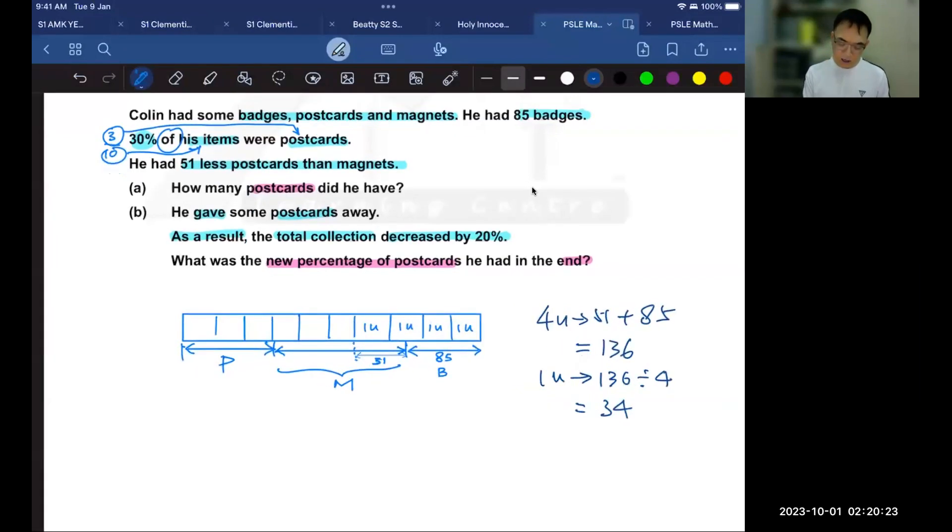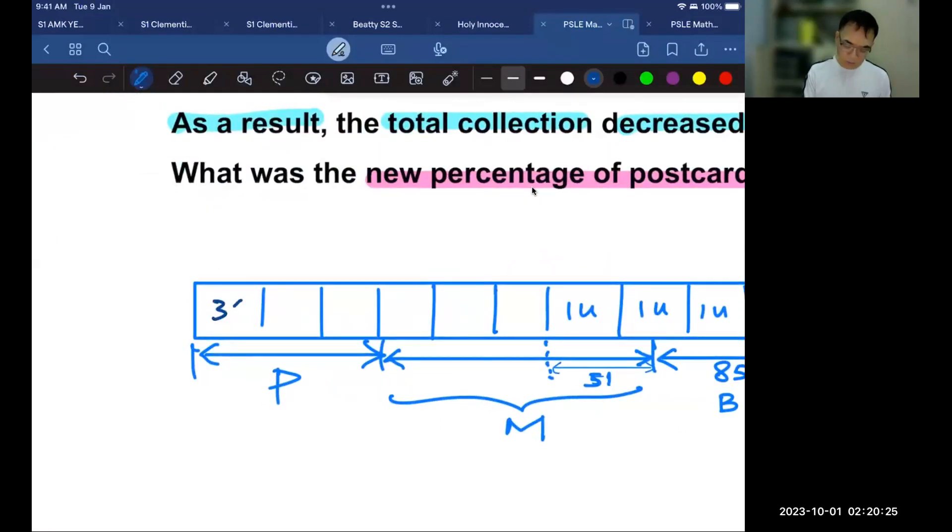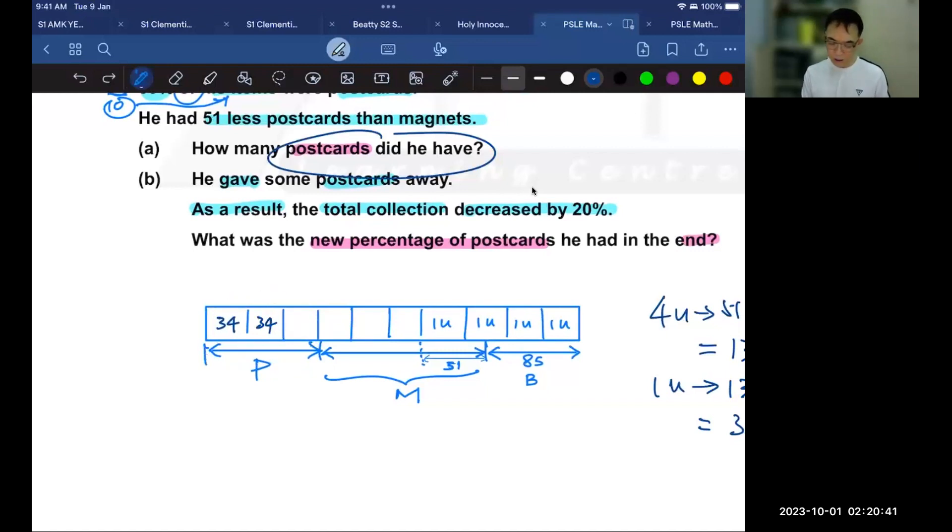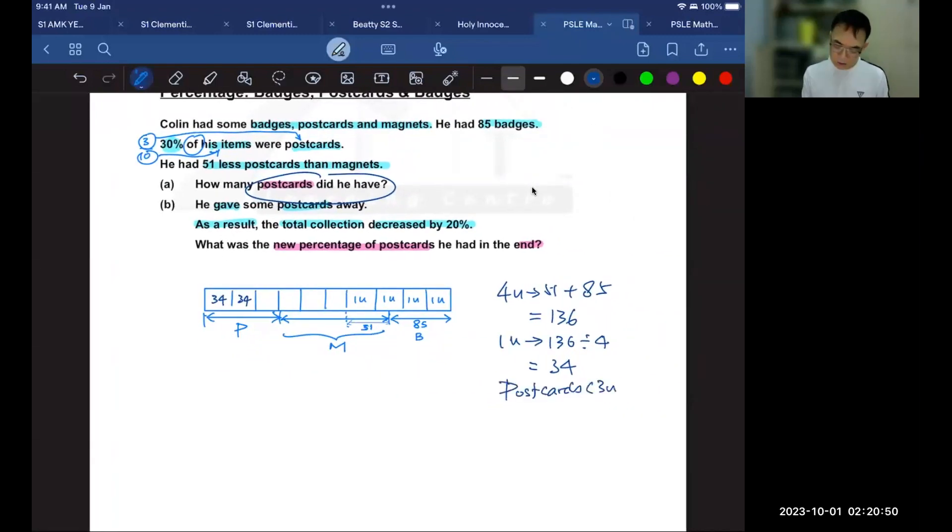So 34 is the value of 1 unit. If 34 is the value of 1 unit, of course, that means they are all 34. Then the question, how many postcards did he have? All I have to do now is to take 34 times 3 units, because postcards has got 3 units. So to find the postcards, which is 3 units, I just got to take 34 times 3 to get 102. So there are 102 postcards.